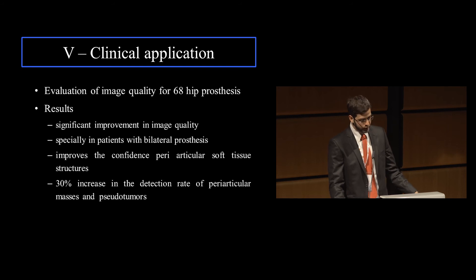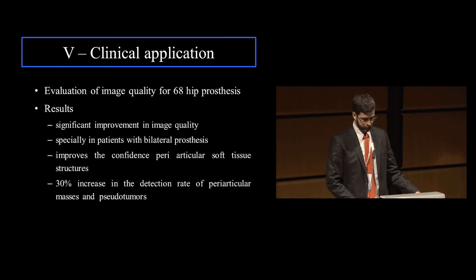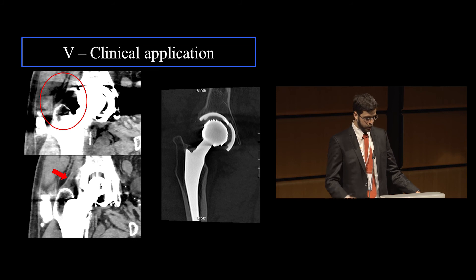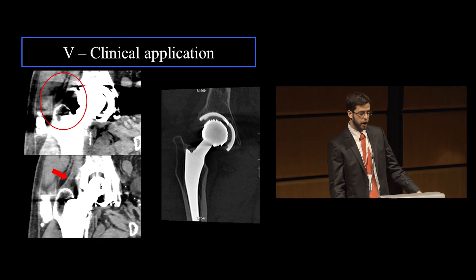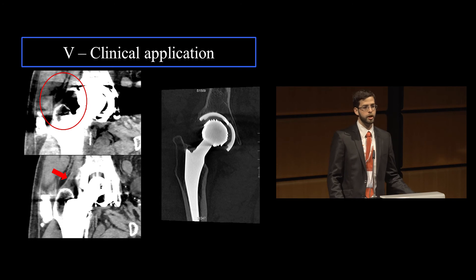Most importantly, it offered a 30% increase in the detection rate of periarticular anomalies, which is non-negligible. For example, due to metal artifacts it was very hard to analyze the gluteal tendons, but once the algorithm is applied you can clearly see the medius gluteal tendon arriving to the greater trochanter with normal appearance. It's also worth noting that metal is somewhat distorted by the algorithm — the prosthesis shape doesn't look entirely correct, as some of the metal is deleted from the image. So this is a very good algorithm for soft tissue evaluation, but conventional imaging should be used for bone stock and metallic components.